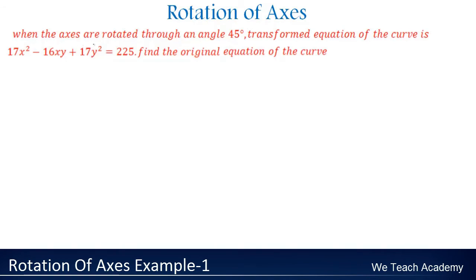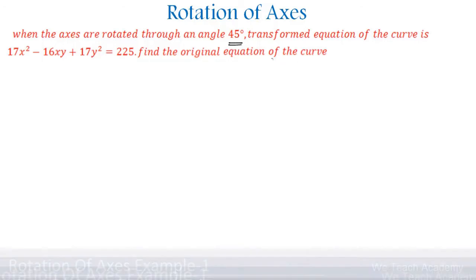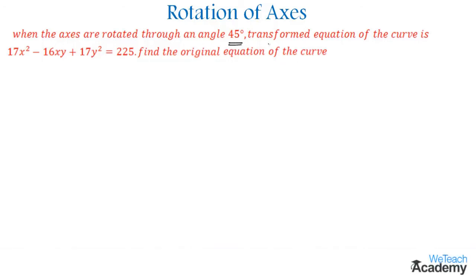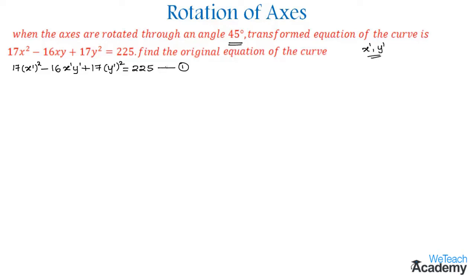When the axes are rotated through an angle of 45 degrees, the transformed equation of the curve is 17x' squared minus 16x'y' plus 17y' squared equals 225, and we need to find the original equation of the curve. Let us name this as equation 1.